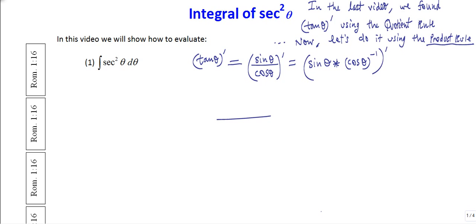Now I'm going to use the product rule. The product rule is u v prime equals u prime v plus v prime u. So I'm going to take the derivative of sine, that's going to be cos of theta times cos of theta to the minus 1 power. It's just 1 over cos of theta. That's the first one.